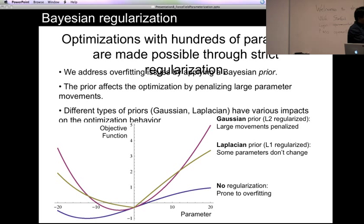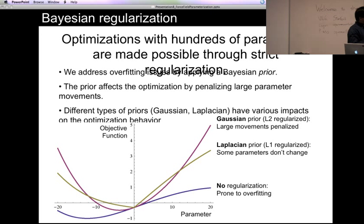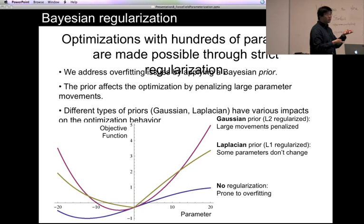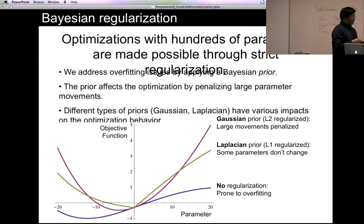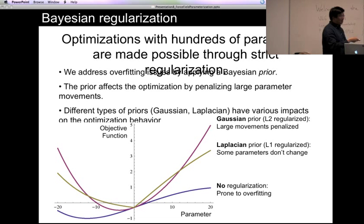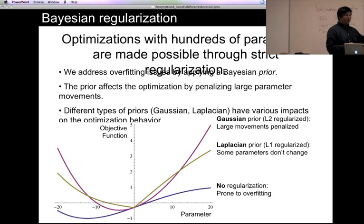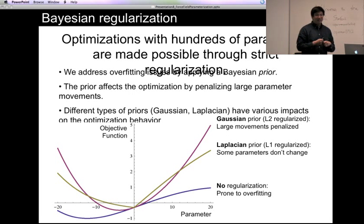For example, if without regularization the parameter ends up at an unphysical value — say a bond angle 15 degrees smaller — you can add a penalty function, which has a strict correspondence in Bayesian probability theory. If you add a parabola to the objective function, that's called a Gaussian prior, and the parameter won't move so far. You can also apply a Laplacian prior — adding the absolute value of the parameter deviation — and its unique feature is that some parameters won't change at all while others are optimized; the algorithm picks them out for you.